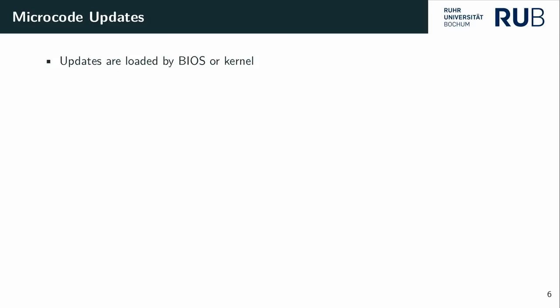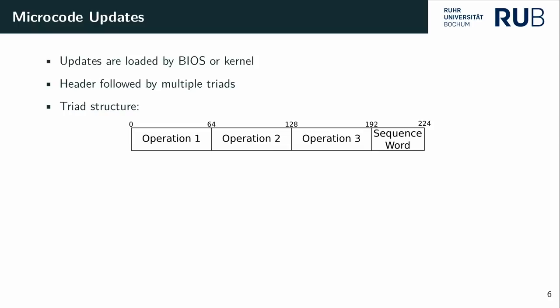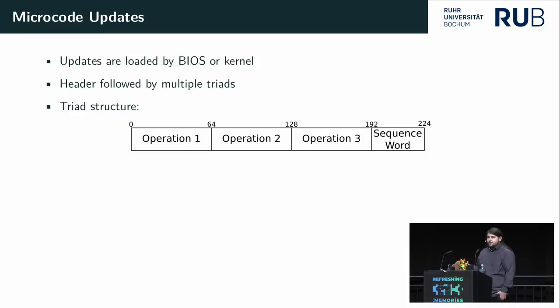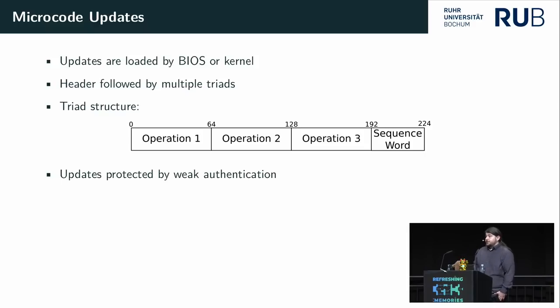Microcode updates are loaded by the BIOS or kernel — Linux has an update driver, and sometimes the BIOS uses a pre-installed version. Updates have a partially documented header followed by the actual microcode loaded into the CPU. Microcode is organized in triads, each having three operations — essentially six instructions with some differences — plus a sequence word indicating which microcode instructions execute next: just the next triad, branching to another, or finishing and returning to x86 code. These updates are protected by cryptographic validation, which we were able to break, allowing us to create, analyze, and apply our own updates.